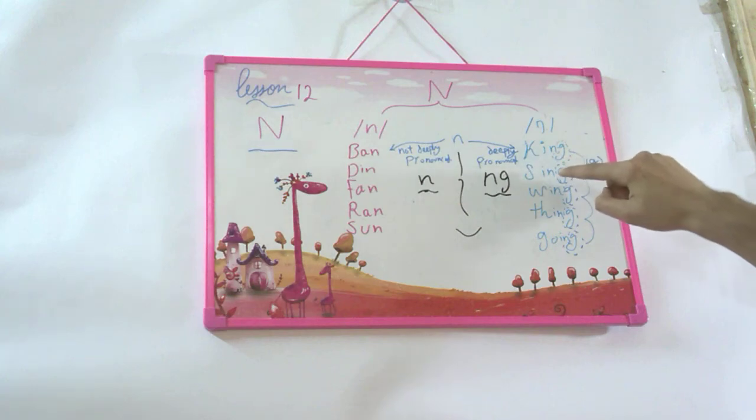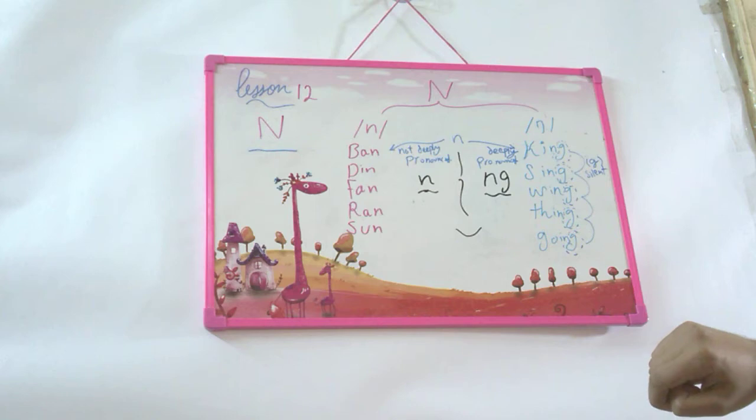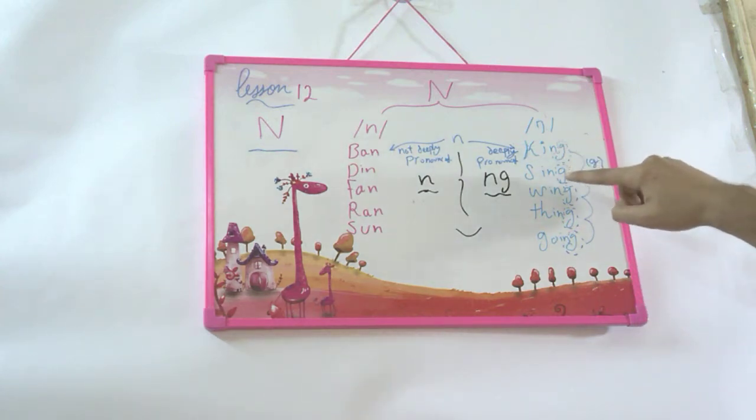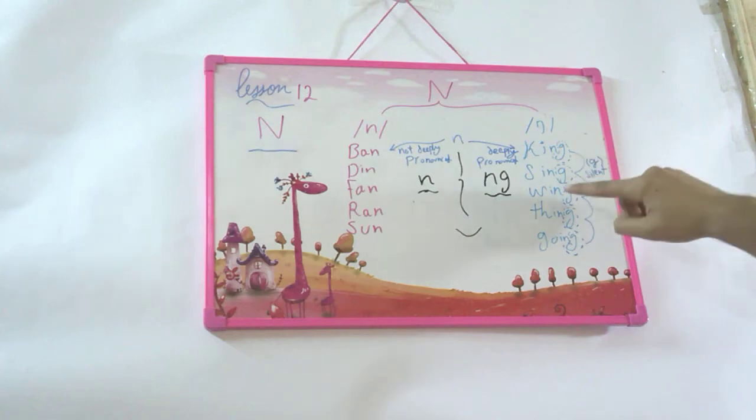So king, sing, wing, thing, going. All right? Again. King, sing, wing, thing, and going.